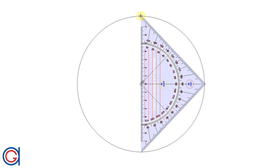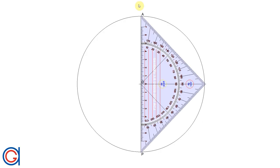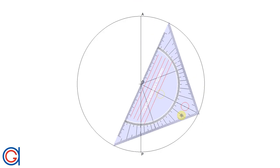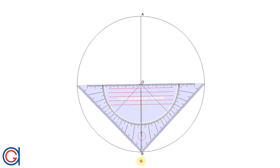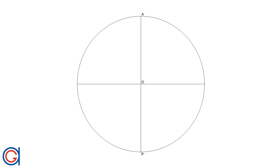So the first step is to draw a vertical diameter in the given circle, and the extremities of this diameter we will call point A and P. And to continue, the next step is to draw a perpendicular horizontal diameter to the previous diameter, and we will call the extremities of this diameter Q and R, as can be seen here on the screen.